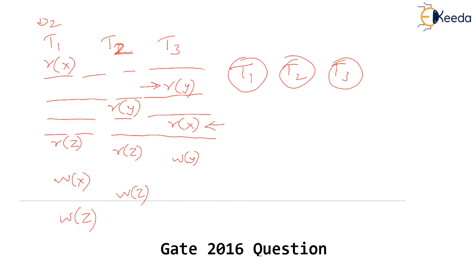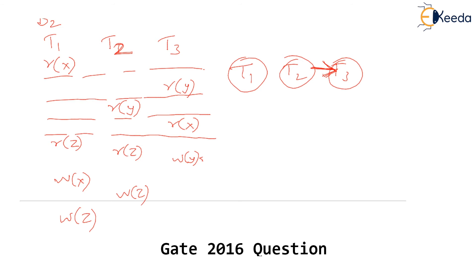The next operation is read Y of T3. Read Y will not conflict with any other operation in T1 or T2 because none of them is writing Y. Remember, read can conflict only with write. So still no conflict. Next, check read Y of T2 — it conflicts with write Y of T3. So we draw an edge from T2 to T3.